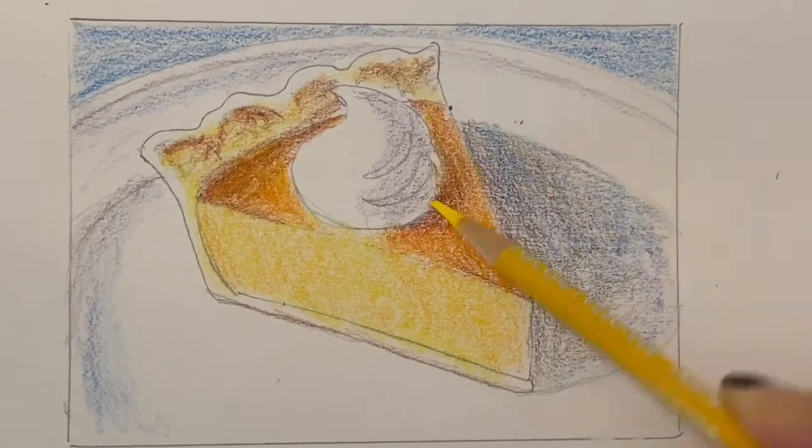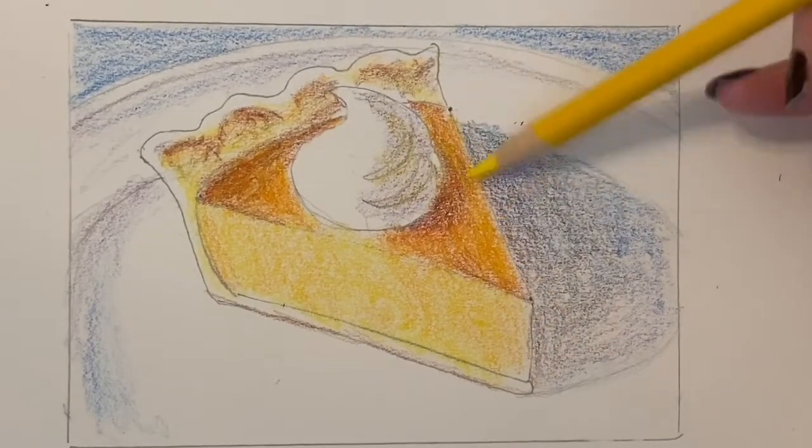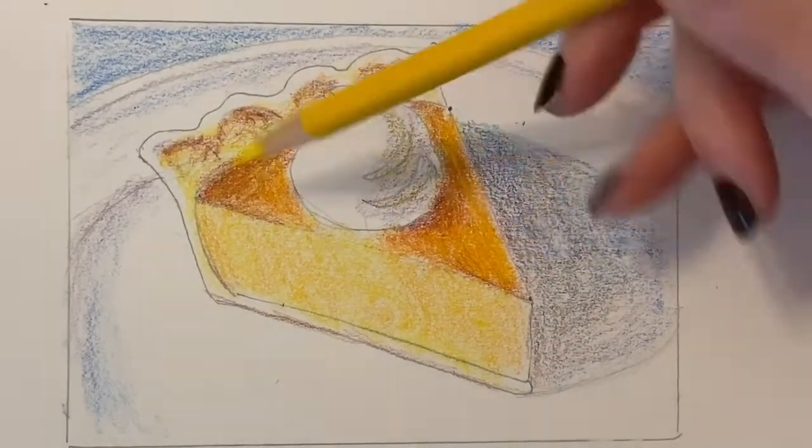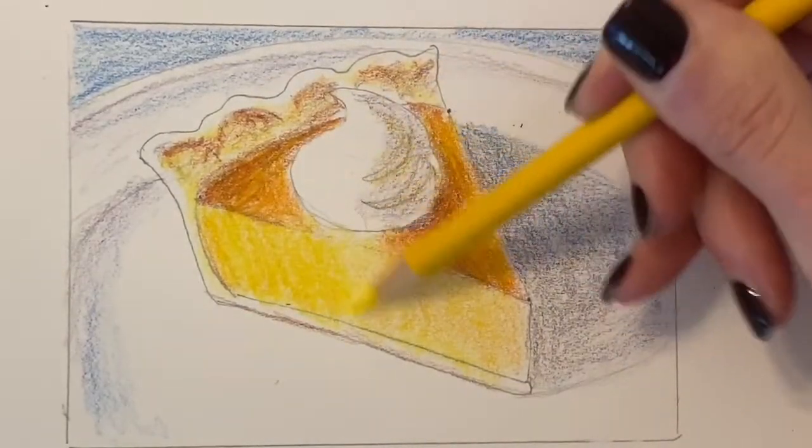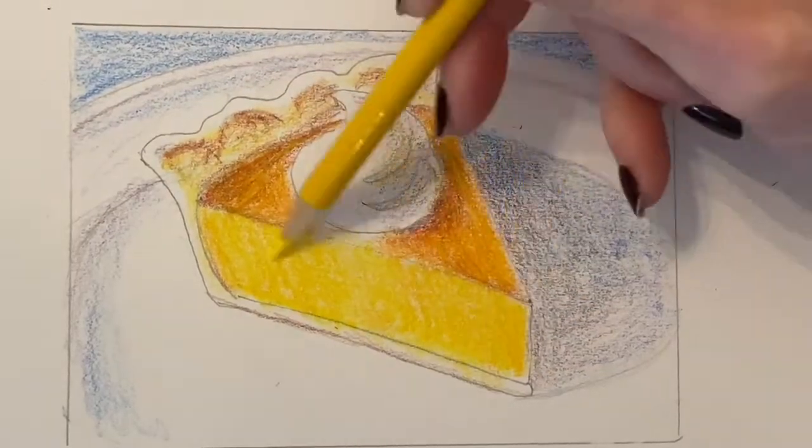Again layering on that yellow will help mix all these colors up together and a little bit of yellow in the whipped cream on that right side won't hurt either just to warm it up a bit.